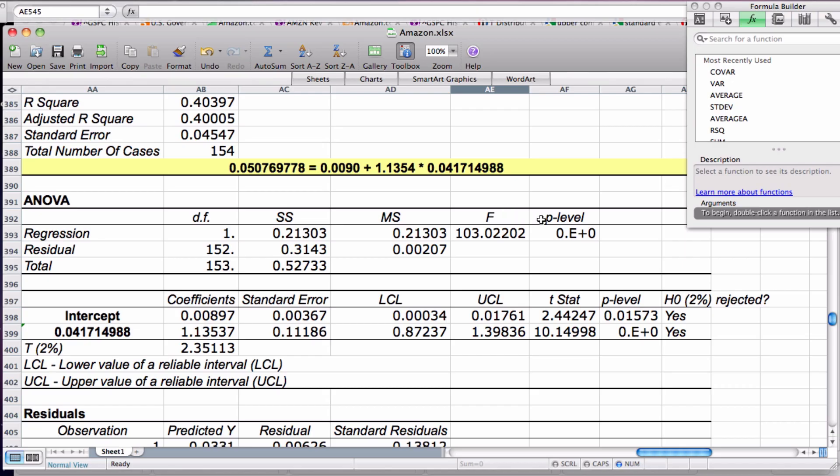The p-level takes into account the f-value, and the p-level is the probability that the results occurred randomly. You can see here that there is an extremely low probability that these results occurred randomly.